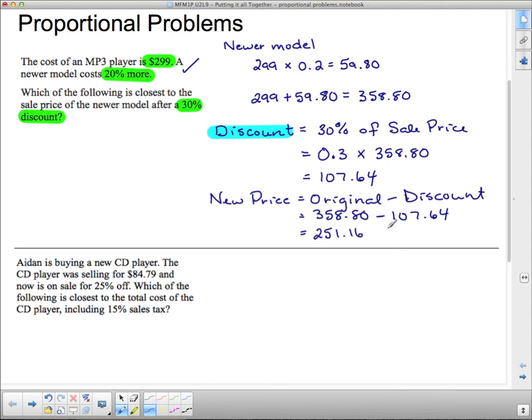And so we can say, therefore, the newer model after the discount is $251.16.